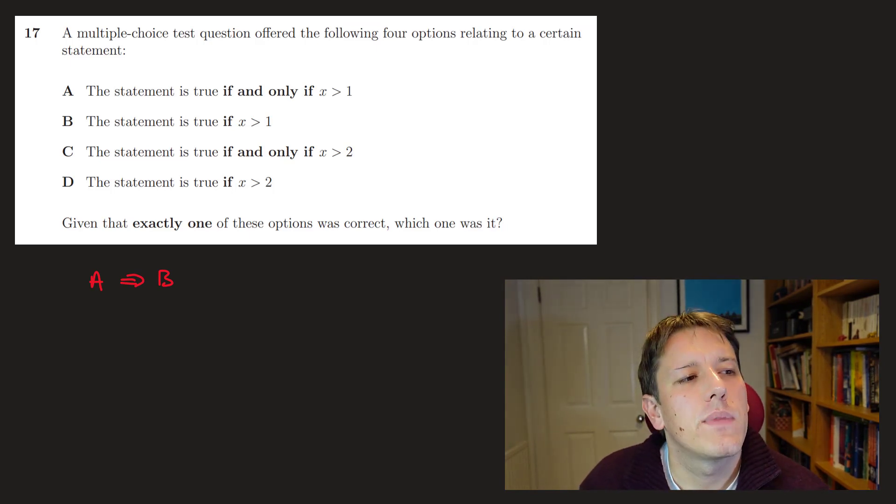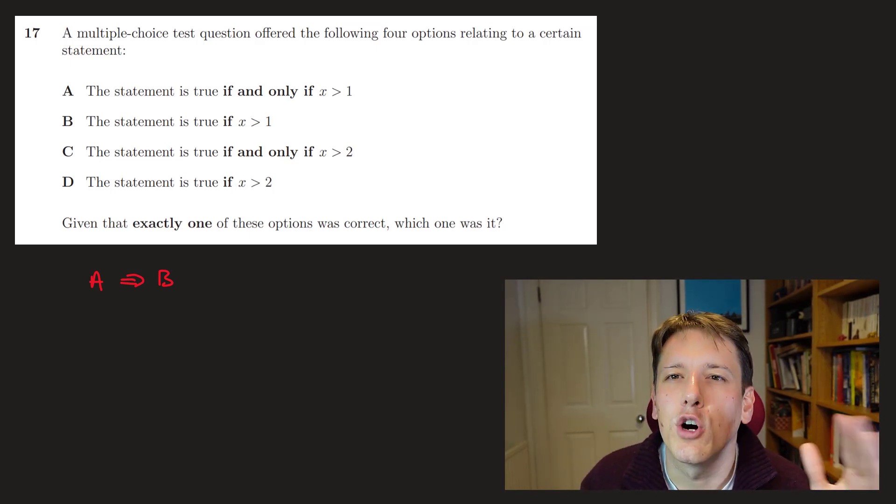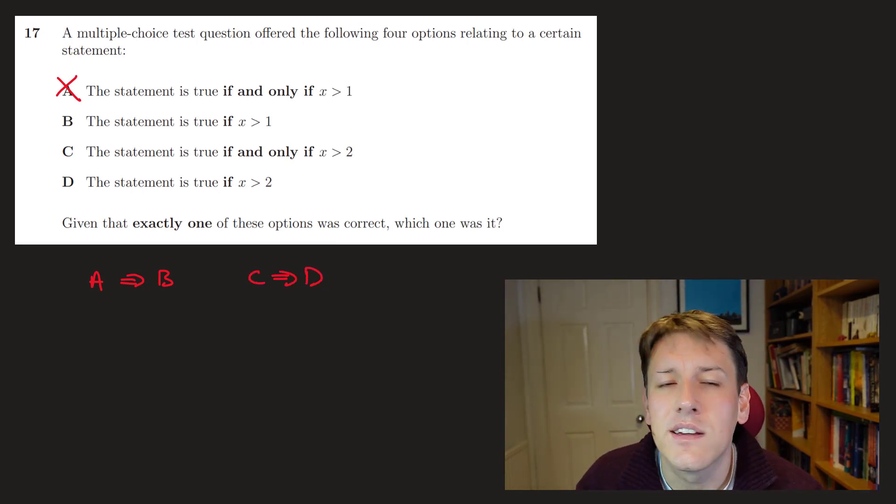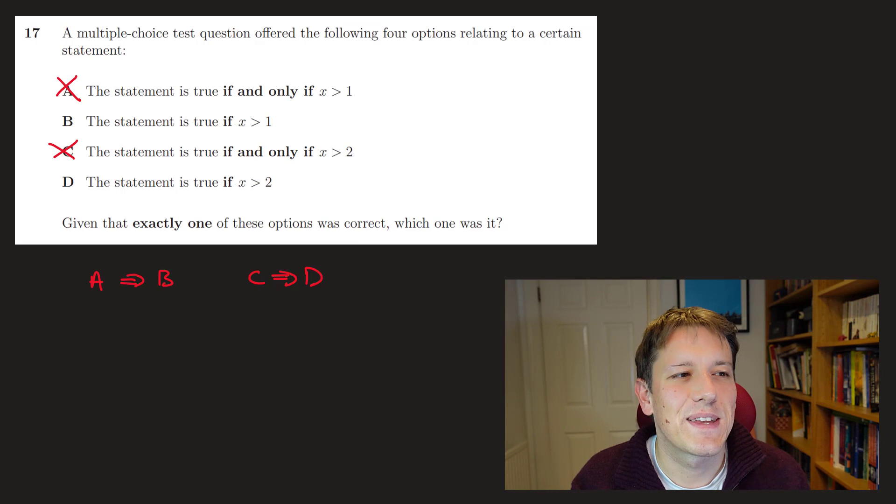So now think about it. Could option a be the only option that was correct then? Well, no, because if a is correct, b also has to be correct, so it can't be a. Right, and for exactly the same reason, because c implies d, the answer can't be c here, right? Because if c were true, d would also have to be true.